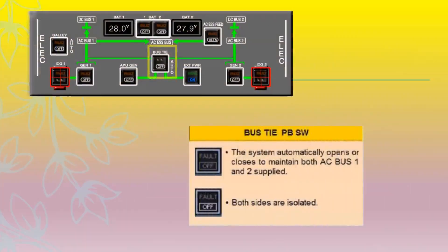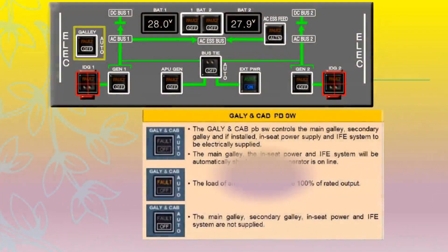No lights on the bus tie pushbutton switch means the system automatically opens or closes to maintain both AC bus 1 and AC bus 2 supplied. The off light illuminates when both sides are isolated.